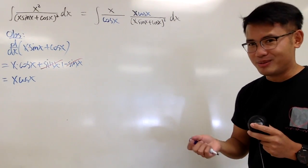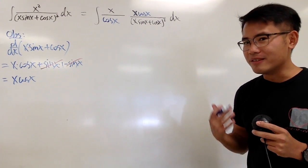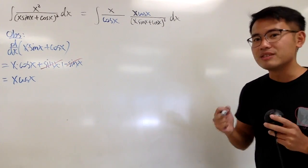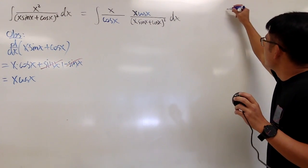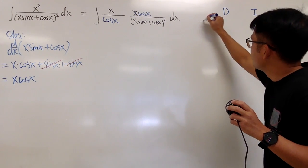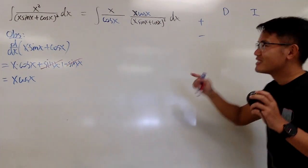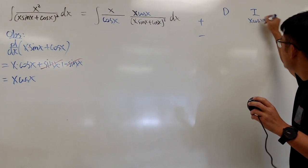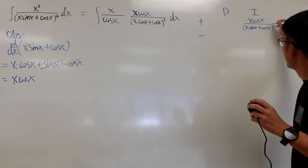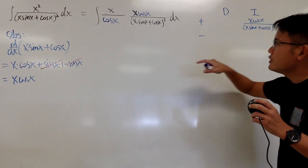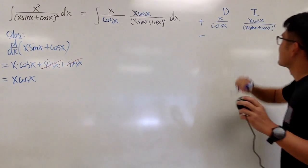This is why I don't teach my students the LIATE method — it's memorization and doesn't force you to think. This kind of problem does force you to think. I will use the DI format. We have the D and I columns with plus/minus signs on the side. We will be integrating x times cos x over (x sin x + cos x) squared, and differentiating x over cos x.